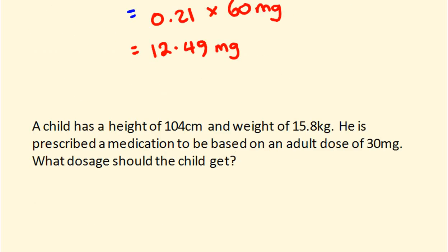Let's look at the third problem: a child has a height of 104 centimetres and a weight of 15.8 kilograms, and is prescribed a medication based on an adult dose of 30 milligrams. What dosage should the child get? We'll need to first work out the child's body surface area using the height and weight, and then use the adult dose formula to get the child's dosage.